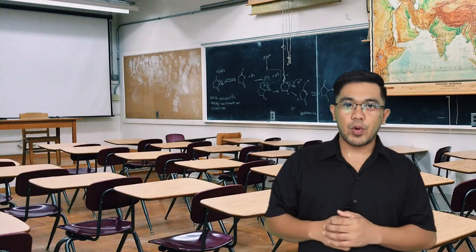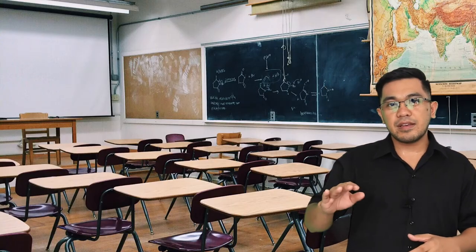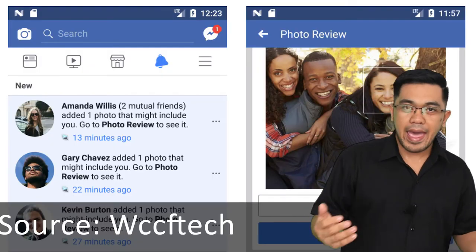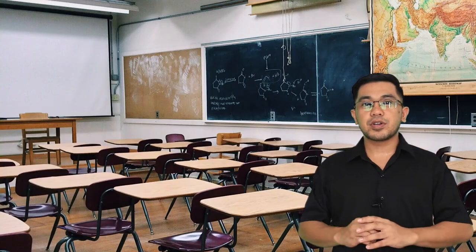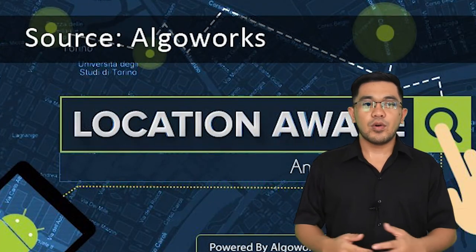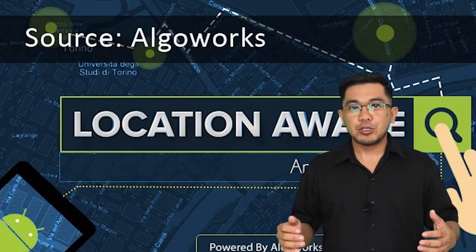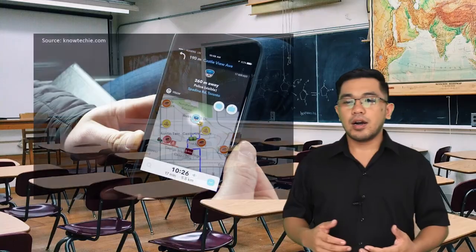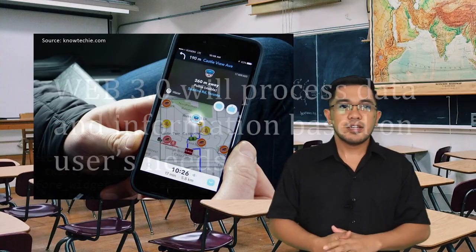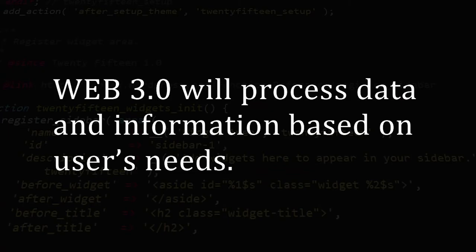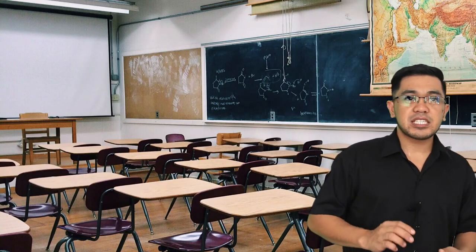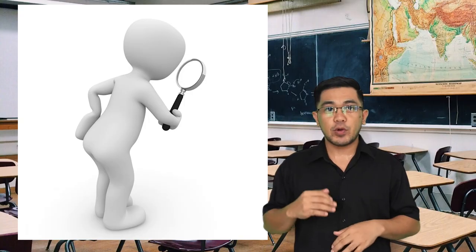Now let's move on to web 3.0. You might have noticed that Facebook notifies you that somebody posted a photo that might include you, or that apps are aware of your current location. The GPS app or Google Maps tracks your location in real time while you're driving. In web 3.0, the web processes data and information based on the needs of users.